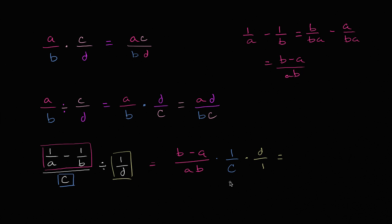And so what does this result with? Well in the numerator I have b minus a times one times d, so we could write this as d times b minus a. And then in the denominator I have a, b, and c.